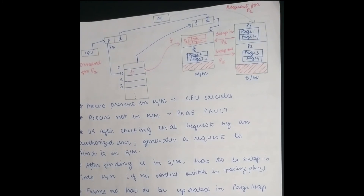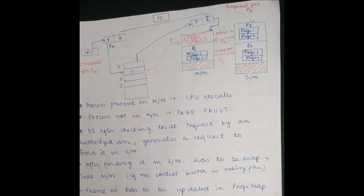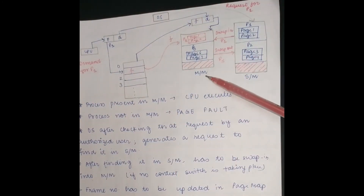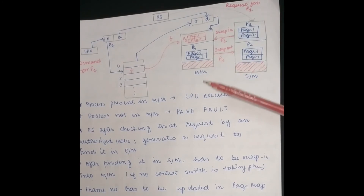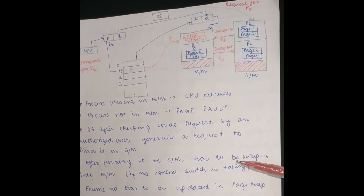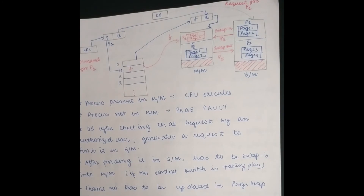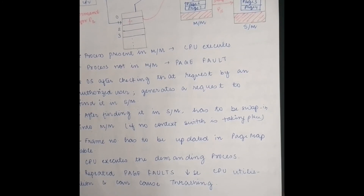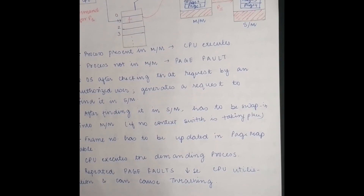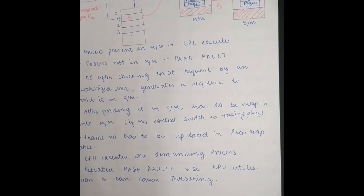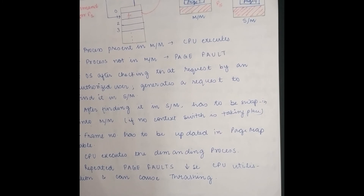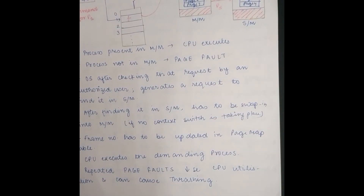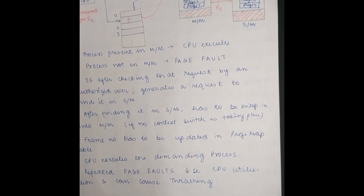Demand Paging only occurs when the CPU demands a specific process. If a process keeps moving between secondary memory and main memory, and main memory is never available, repeated swap-in and swap-out operations can cause thrashing. A page fault occurs when the CPU demands a process that is not present in main memory and has to send a request to secondary memory. Repeated page faults lead to thrashing.